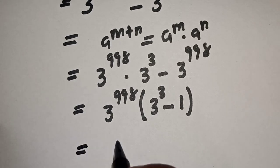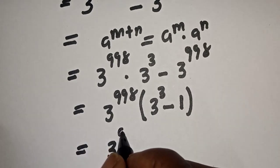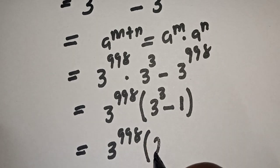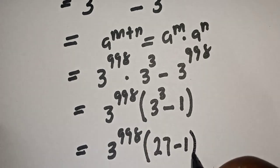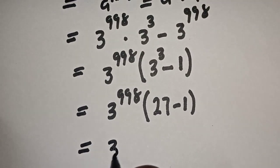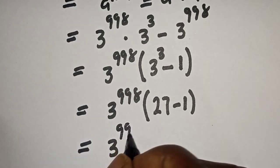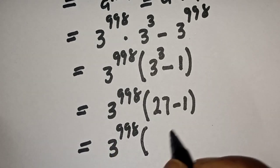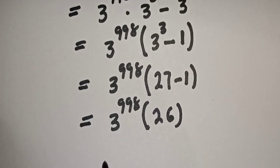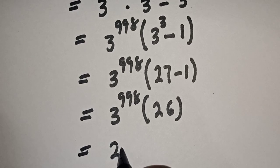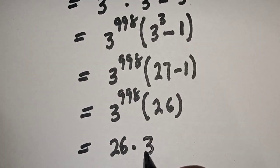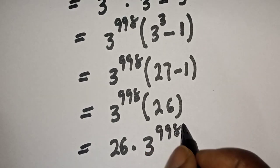3 raised to power 998 bracket 3 raised to power 3 minus 1. This is equal to 3 raised to power 998 bracket 27 minus 1, which equals 26. Our final answer is 26 multiplied by 3 raised to power 998.